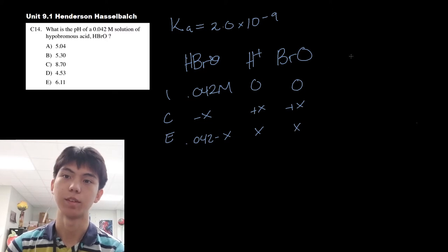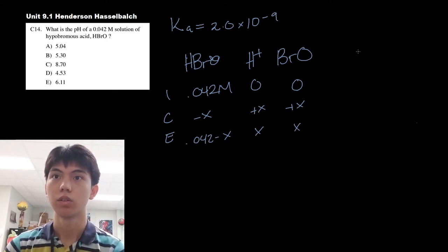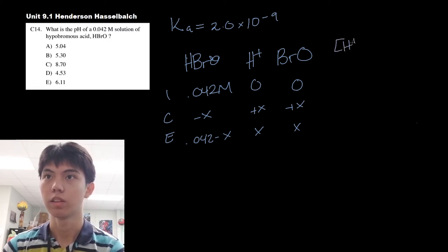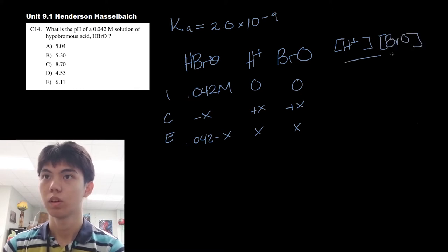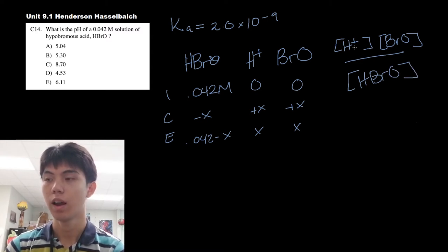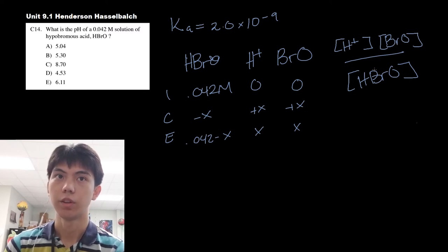And now we can set up our Ka. To find this, we set it up like this over the molarity HBrO. So we find the molarity of hydrogen ions and we get the hyperbromous molarity also.